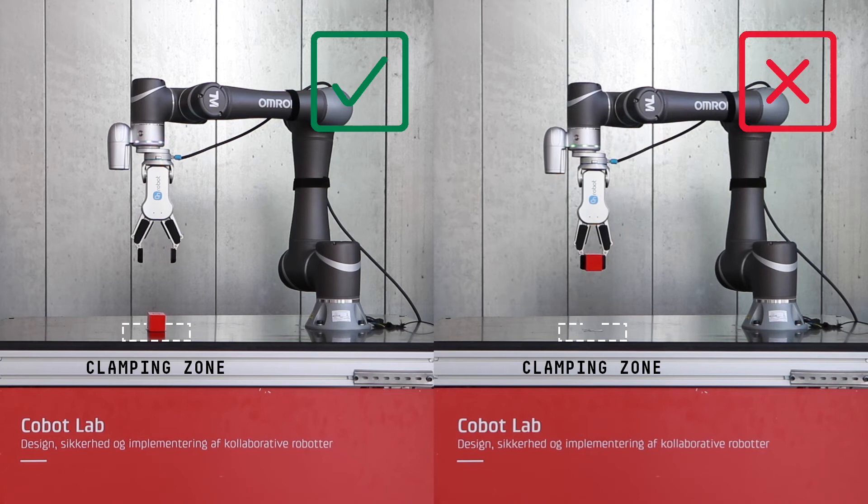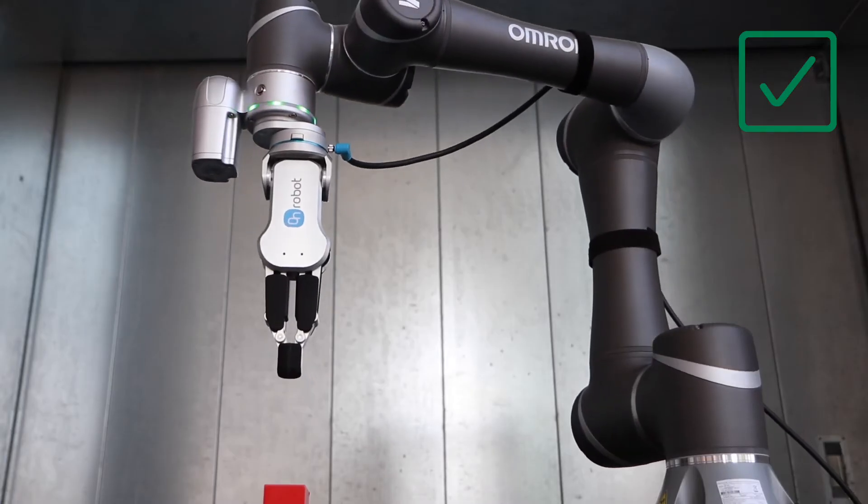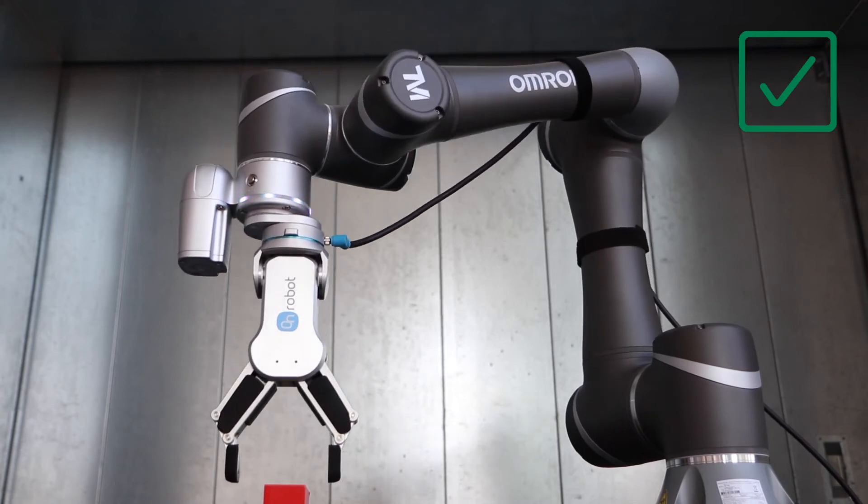Program the robot to move slowly with low force towards the pickup point to minimize the probability and severity of a clamping situation.